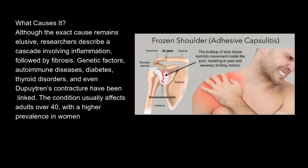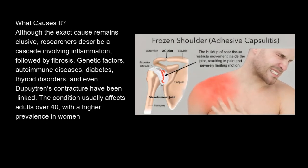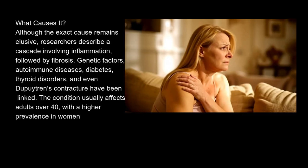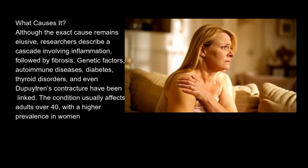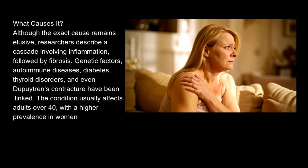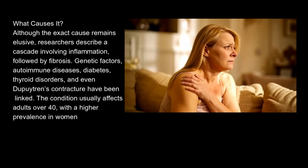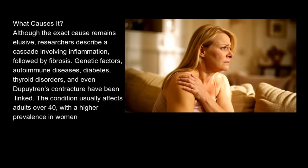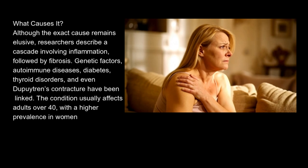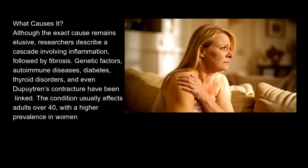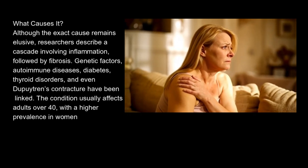What causes it? Although the exact cause remains elusive, researchers describe a cascade involving inflammation followed by fibrosis. Genetic factors, autoimmune diseases, diabetes, thyroid disorders, and even Dupuytren's contracture have been linked. The condition usually affects adults over 40, with a higher prevalence in women.